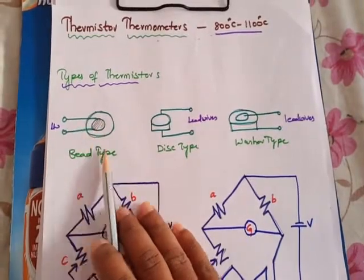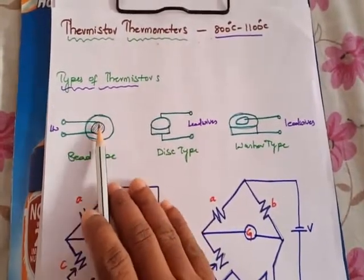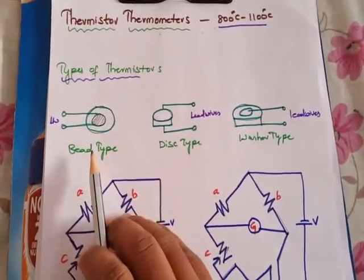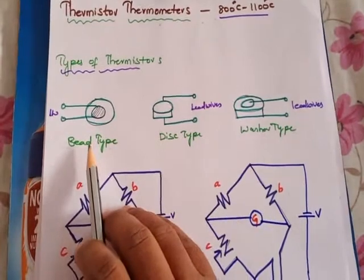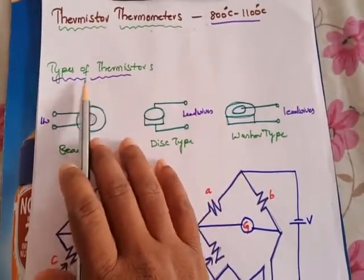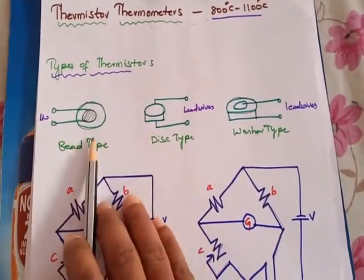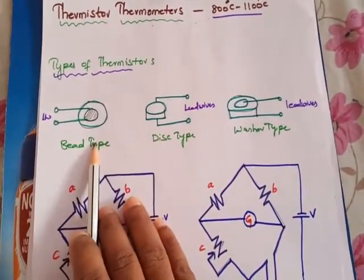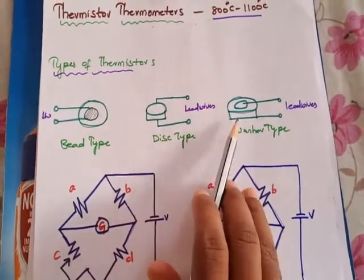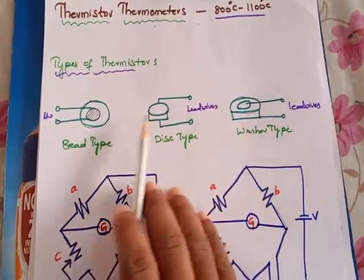These are the general materials used for the preparation of thermistors. They simply look like a capsule-like structure. You can see the different types of thermistors here — this is bead type, this is disc type, and this is washer type.